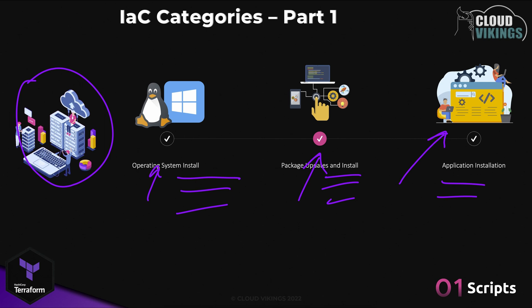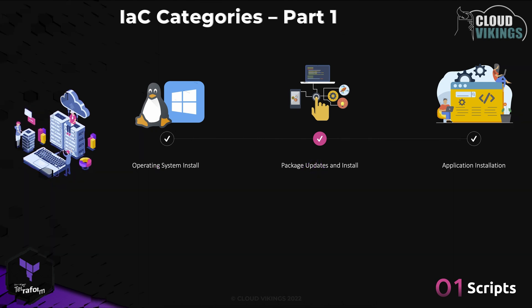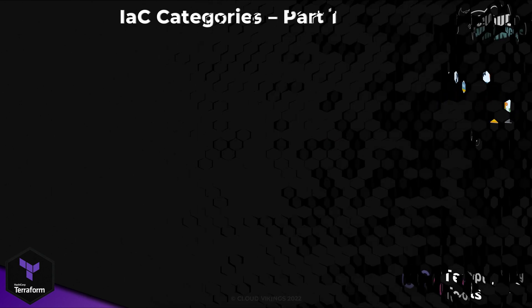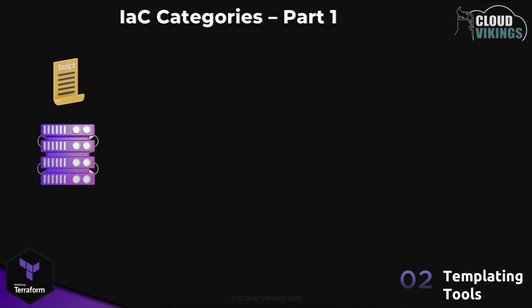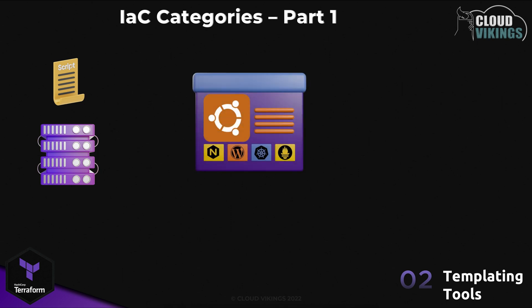Next we'll look at the image templating category. The idea with templating tools is that instead of executing code on a server to configure it, you define how that server should be set up in the form of a template or image. Things like what operating system would be installed, what packages to install, and any static configuration files to include would all be defined in that template. From this template, the tool would generate an image file with all the required configuration baked in.